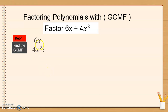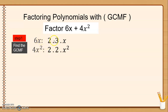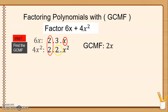Step number 1: Find the GCMF. Factors of 6x are 2 times 3 times x. Factors of 4x squared are 2 times 2 times x squared. The common number is 2, and x has the lowest exponent or degree. So our GCMF is 2x, which can divide both 6x and 4x squared.